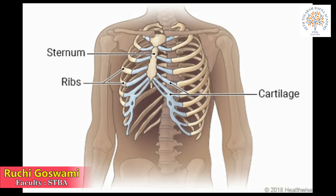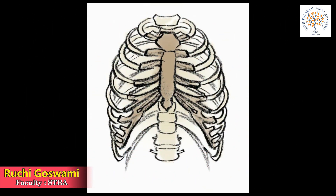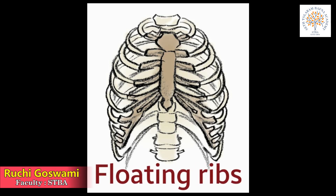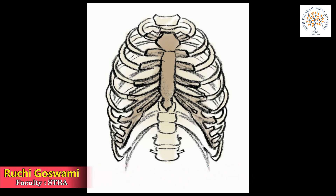A long bone at the center of the chest — the sternum — holds the ribs from the front. The ribs are also attached to the backbone at the back. However, the last two pairs of ribs are not attached to the sternum and so are called floating ribs. You can feel your ribs by running your fingers across the chest.